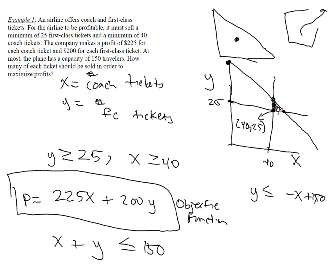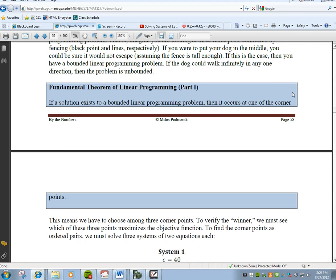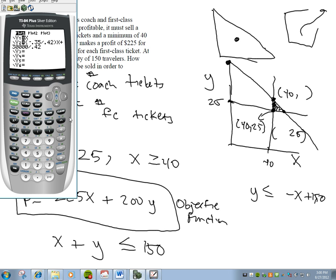For the point over here, we know Y is equal to 25 but we don't know what X is. Similarly, we know X is 40 but we don't know what Y is going to be. So I'm going to plot these three equations now that we have a better idea of what's going on. I'll plot Y equals 25, and then the line negative X plus 150. I can't really plot X equals 40, so I'm just going to set that up in my window as I go.